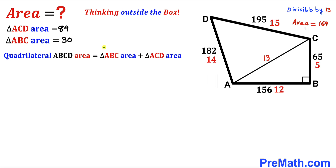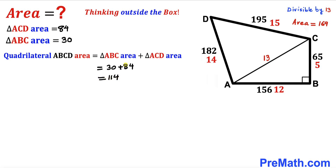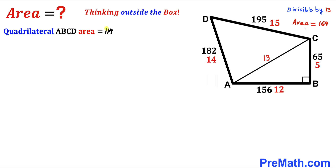Recalling our equation: the area of quadrilateral ABCD equals the sum of the two individual triangle areas. The area of triangle ABC is 30 and the area of triangle ACD is 84. So the total is 30 + 84 = 114 square units. The area of quadrilateral ABCD with the scaled dimensions is 114 square units.